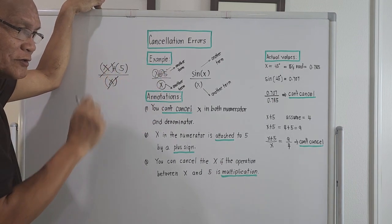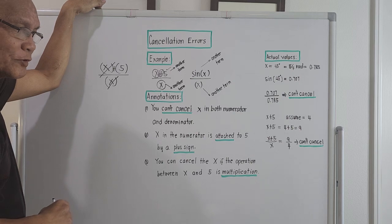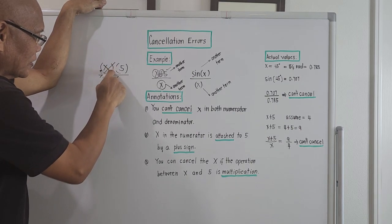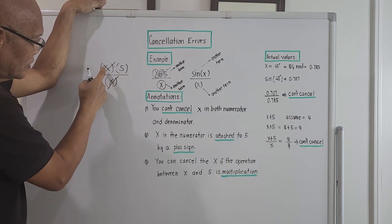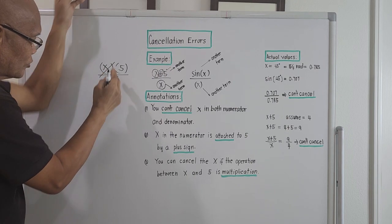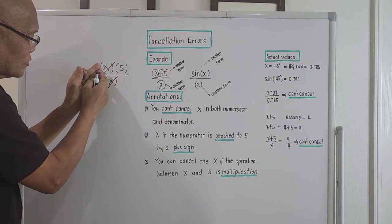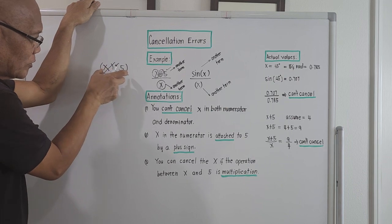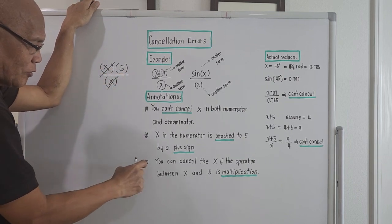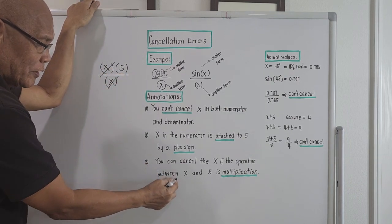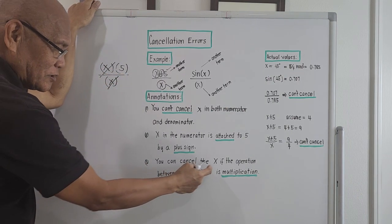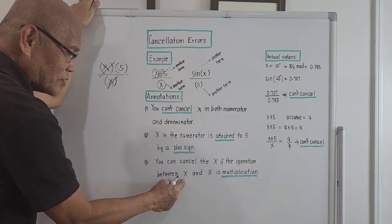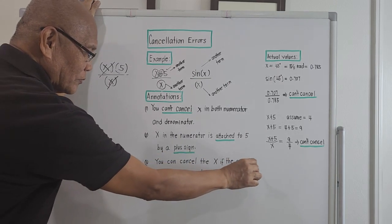The only time you can cancel x in both the numerator and denominator is when the operation on the numerator is actually multiplication. According to annotation number three, you can cancel x if the operation between x and 5 is multiplication.